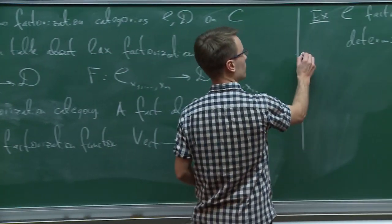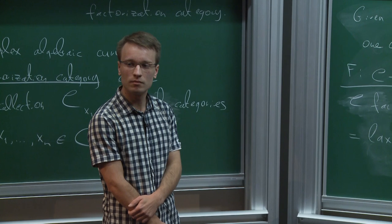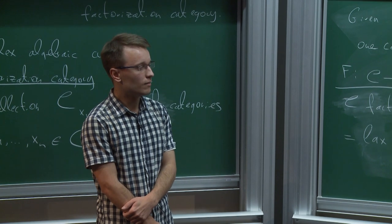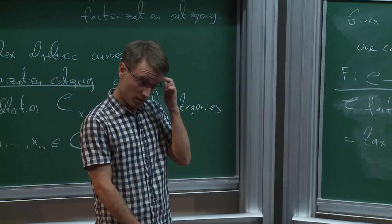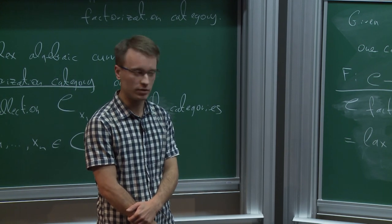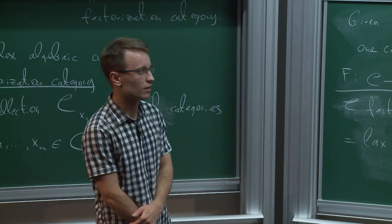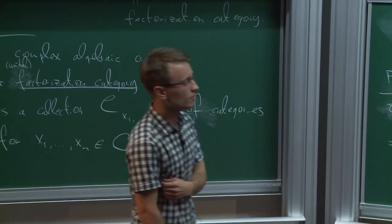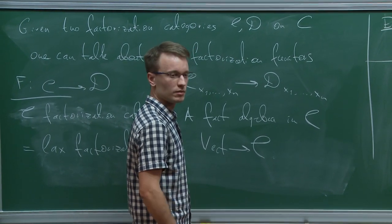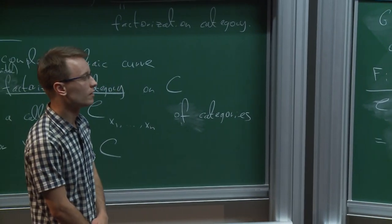For the question about what's the minimum you need: for the trivial construction over a point, it's enough to have a braided monoidal category; for an arbitrary curve, you need a ribbon — or balanced — category. Given the definition of factorization category and factorization algebra, I can define the notion of a 3D TFT having a chiral boundary condition. The data of a 3D TFT will be a factorization category, and the data of a chiral boundary condition will be a lax factorization functor from C into Vect.